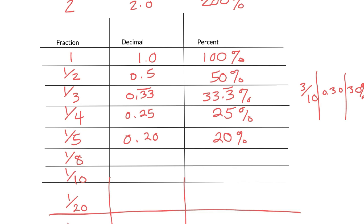1 eighth, and sometimes we'll see this when they're looking for easy numbers for you to work with. 1 eighth, you'll notice, is 1 half of 1 fourth. So that is 0.125, which is 12.5%.